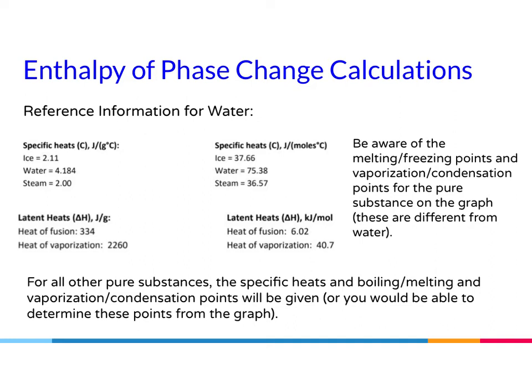Be aware of the melting, freezing, vaporization, and condensation points for the pure substance on the graph. These are different from water — zero degrees Celsius and 100 degrees Celsius. If you do not have water in your graph, then your melting, boiling, freezing, and condensation points will all be different. For all other pure substances, the specific heats and transition points will be given, or you can determine them from the slants and horizontal lines on the graph.